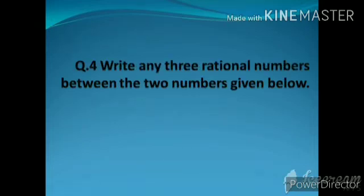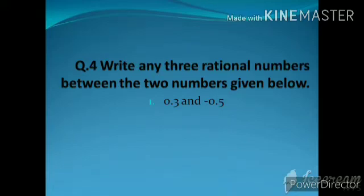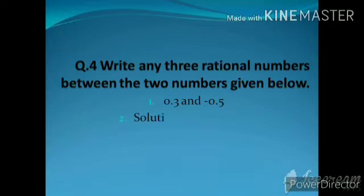Question number four: write any three rational numbers between the two given numbers. Sub-question 1: between 0.3 and −0.5. Between these two numbers we have to write any three rational numbers. We get rational numbers such as 0.2, 0.1, and −0.1; or you can take −0.2, −0.3, or −0.4.